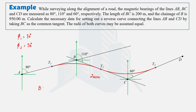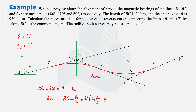Using the tangent length formula — tangent length = R × tan(Δ/2) — and substituting the deflection angles of 30 and 50 degrees with a common radius R, we get: 200 = R × tan(15°) + R × tan(25°). Since R is the only unknown, we solve this equation to find the radius.